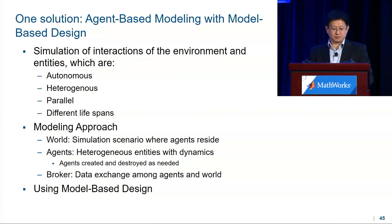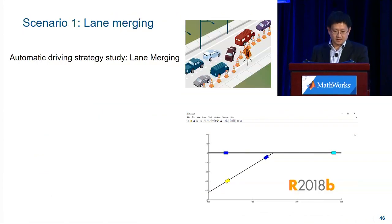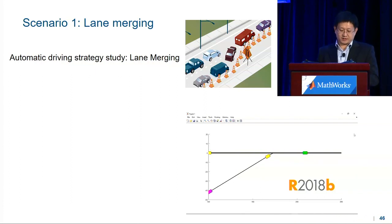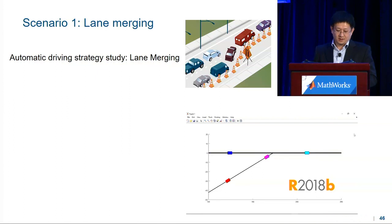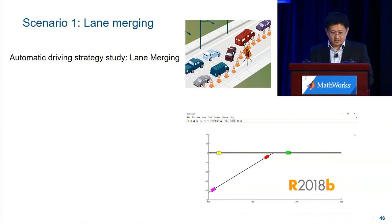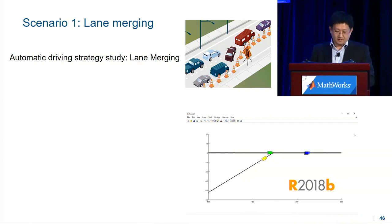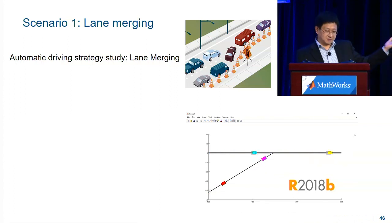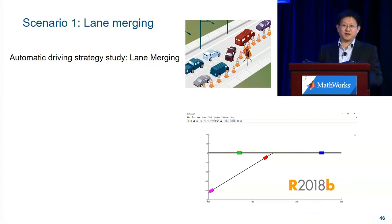We want to use model-based design. Here's a simple example we call line merging. We try to simulate the traffic right in front of MathWorks headquarters in Natick. People try to go home at 6 PM and merge onto the main line. Most MathWorks employees are very nice drivers — you can see we try to merge very safely. But occasionally there are exceptions. Fortunately, we have a very good driving strategy to avoid car accidents.